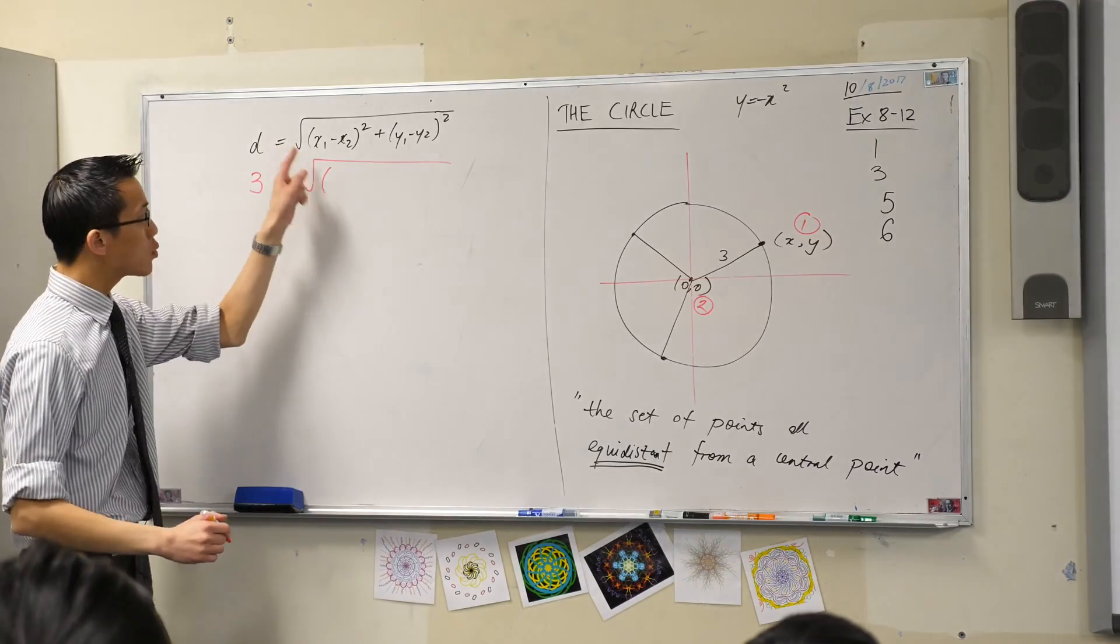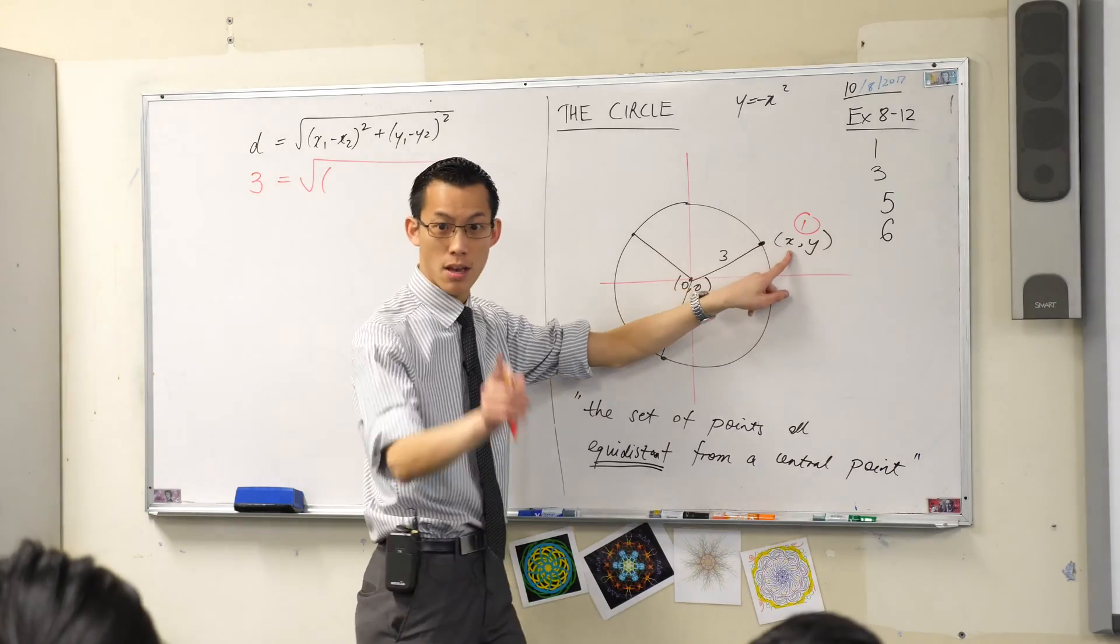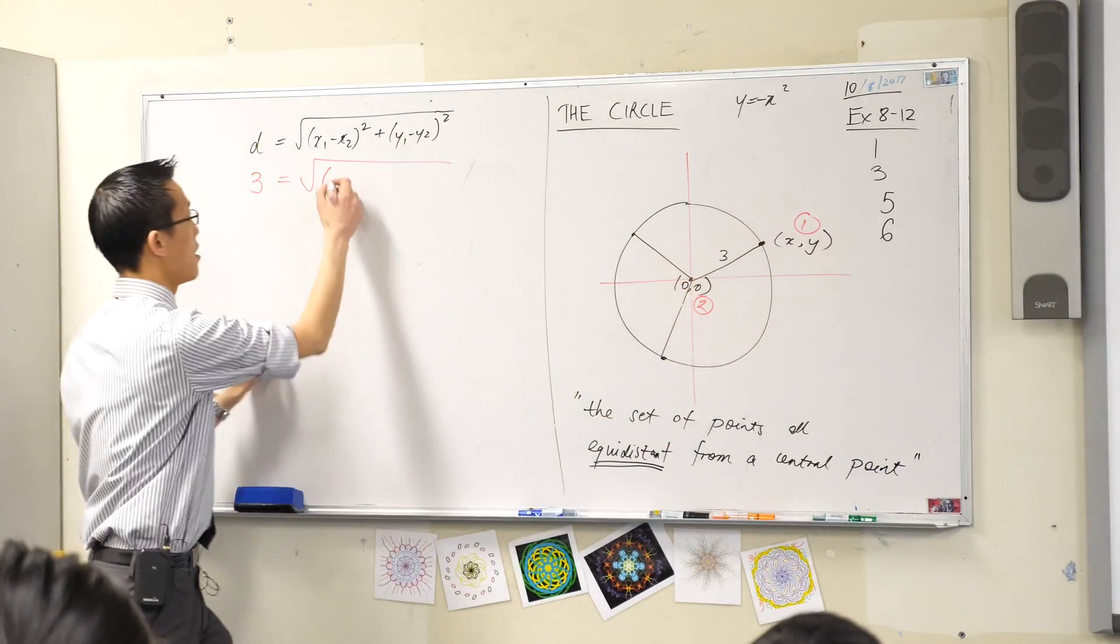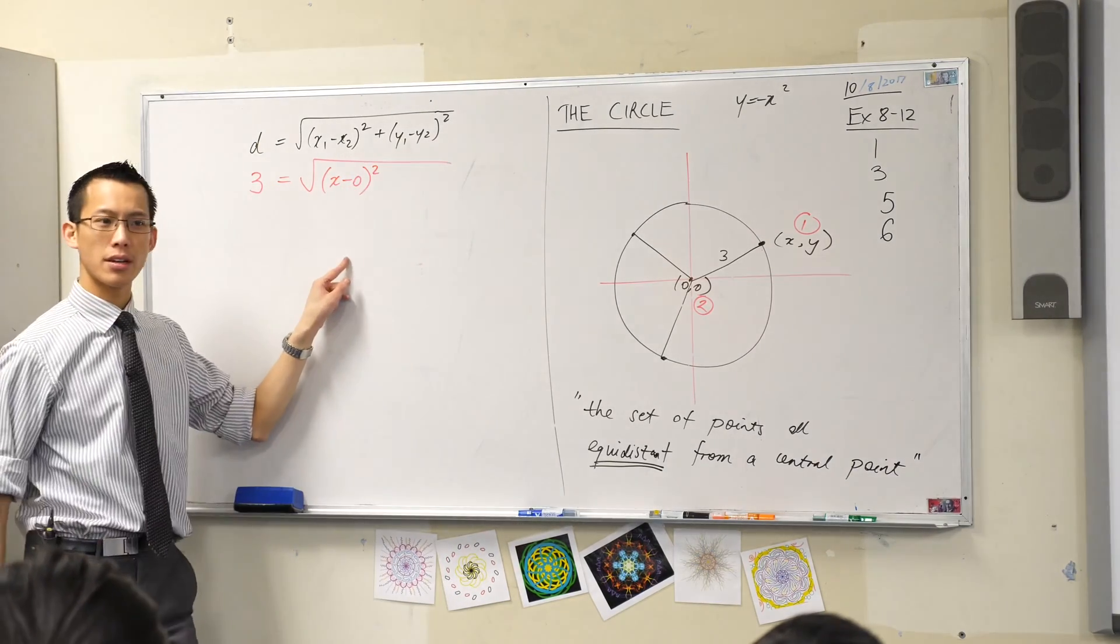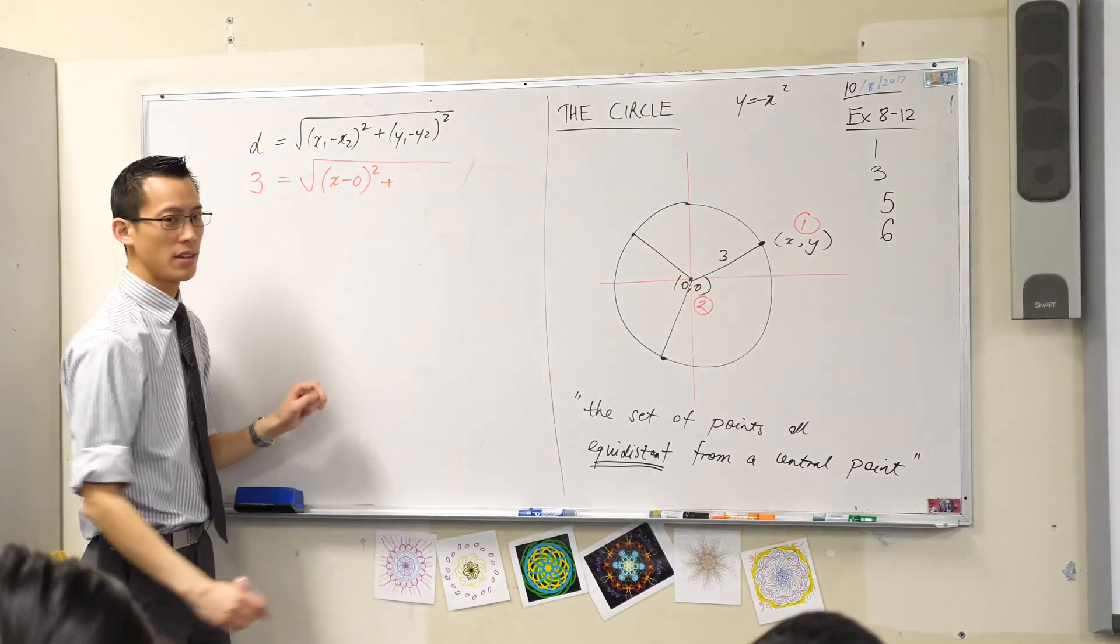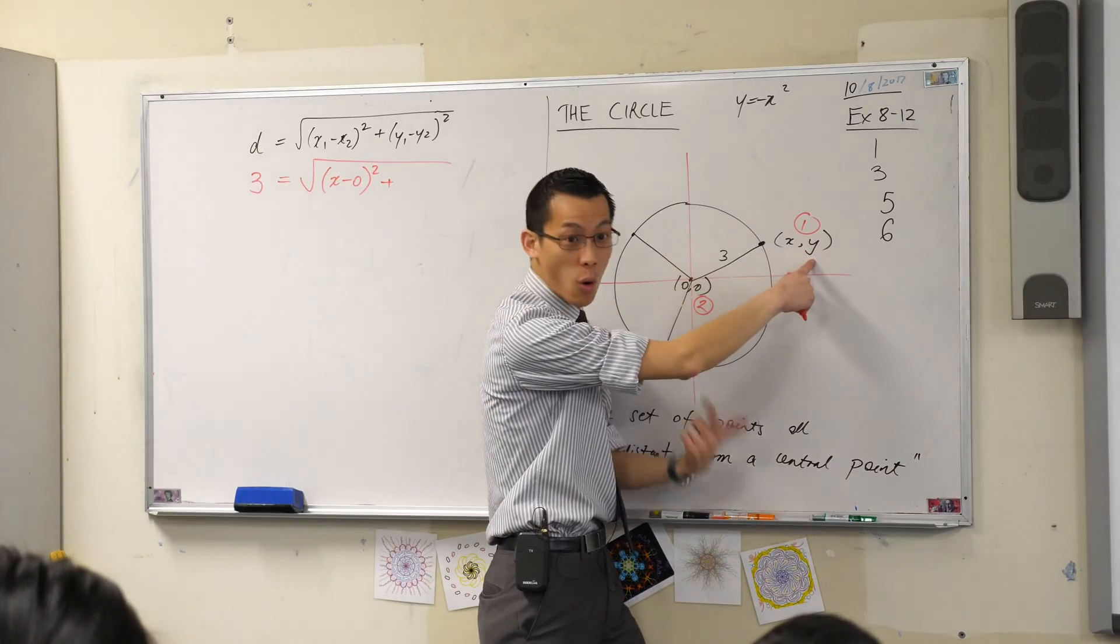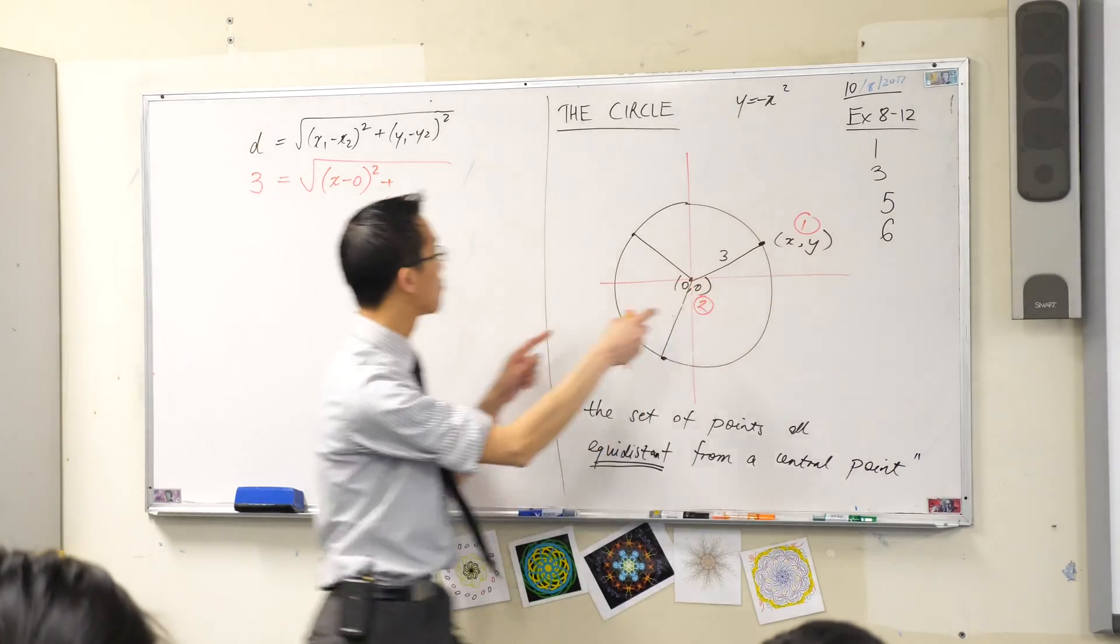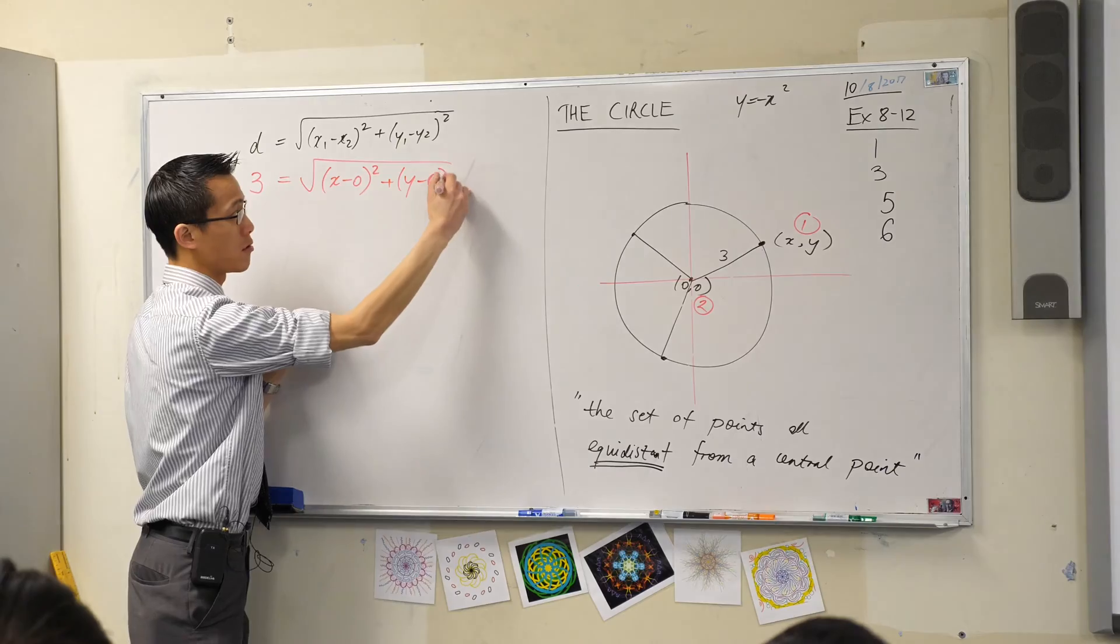So x₁ minus x₂ is going to be x minus 0, right? x minus 0, and that has been squared. Then when I go over to this part of the equation, I'm looking at the y values. Well, this y value is just called y, and this y value is zero. So this part will be y minus 0 squared.